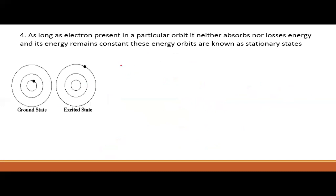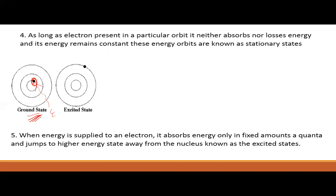As long as an electron is present in a particular orbit, it neither absorbs nor loses energy. This is considered the stationary state or ground state of that particular electron and atom. If energy is absorbed from any external source, the electron jumps from its ground state to an excited state. This excited state is temporary, and after some interval of time, the electron loses energy and returns to its ground state, releasing energy in the form of electromagnetic radiation. The concept of ground state and excited state is given by Neil Bohr.